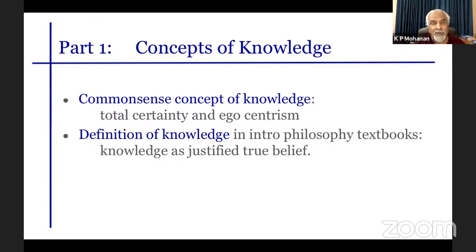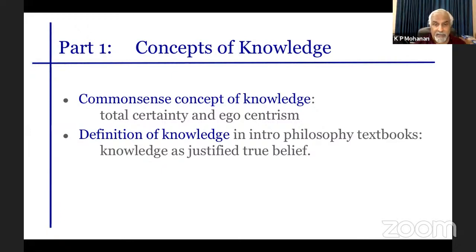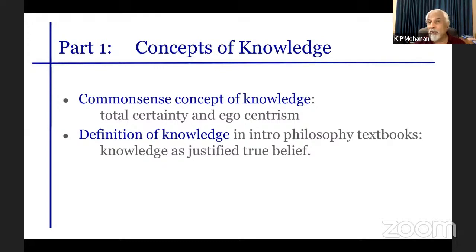There's a slightly different concept of knowledge in introductory philosophy textbooks. The most common classical definition is that knowledge is justified true belief. The 'true belief' part conveys the same total certainty and egocentrism. But in addition, the idea of justified true belief says it is not sufficient to have belief which is totally certain, or even true belief — the belief must be justified. You must know the reasons for the belief. If you believe the earth goes around the sun but don't know the evidence, that doesn't qualify as knowledge. The concept of justification is important.